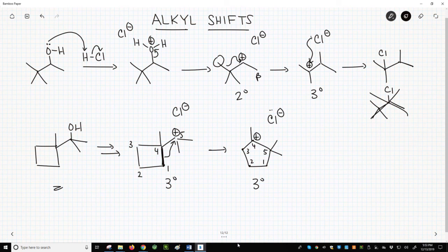Now that we have a more stable structure, the chloride can attack our carbocation carbon, and we will get our final product, which now has a five-membered ring instead of a four-membered ring.